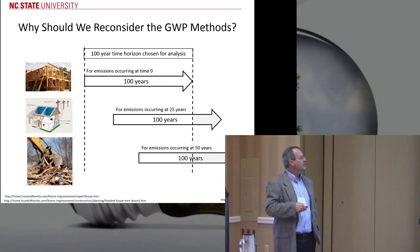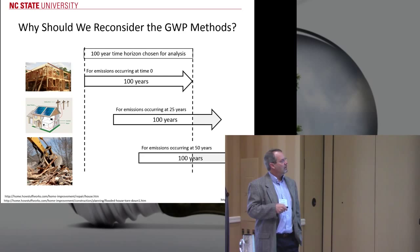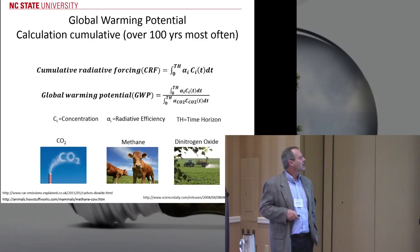So we artificially shift this emission arrow into this region, treating emissions at 25 years as equal to emissions at zero years. And for end-of-life, maybe occurring at 50 years, our time interest doesn't really match what's going on in real life. It would be more appropriate to understand how this timing actually affects the global warming potential.